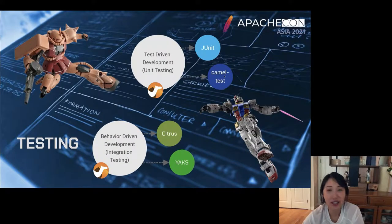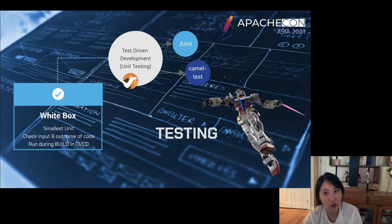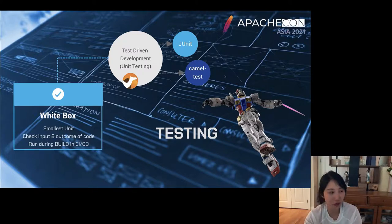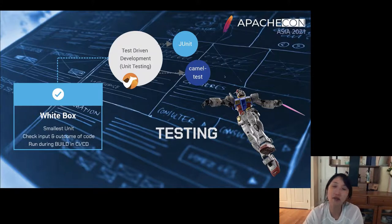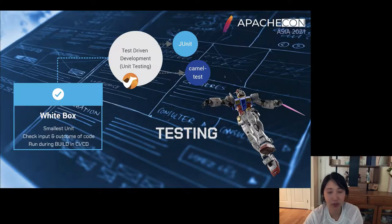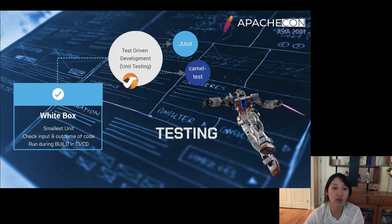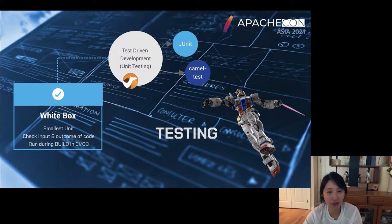For testing, there are two approaches. The first is traditional test-driven development — white box testing — where you use JUnit or Camel's testing utilities to mock endpoints you don't have available locally. This is done during development and build time. If the build fails at unit testing, it fails the build. You know exactly what's in your program, so you can verify expected outputs at each step.